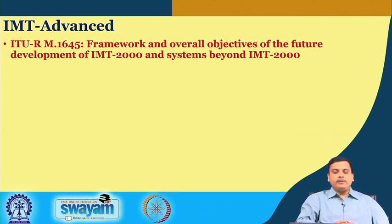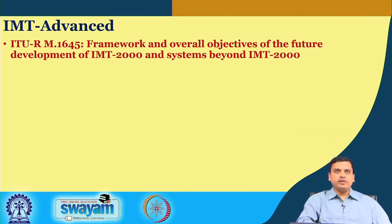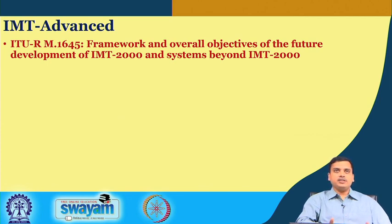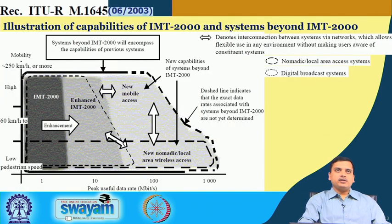After reviewing second and third generation systems, we move towards the next generation or 4G systems, termed IMT advanced by ITU. IMT stands for International Mobile Telecommunications. The ITU-R recommendation report M.1645 describes the framework and overall objectives of future developments of IMT 2000 and systems beyond 3G. This document provides an illustration of the capabilities of IMT 2000 and systems beyond IMT 2000.